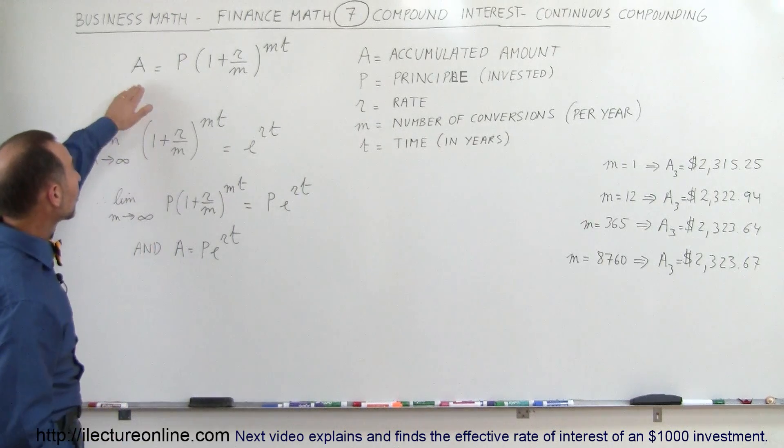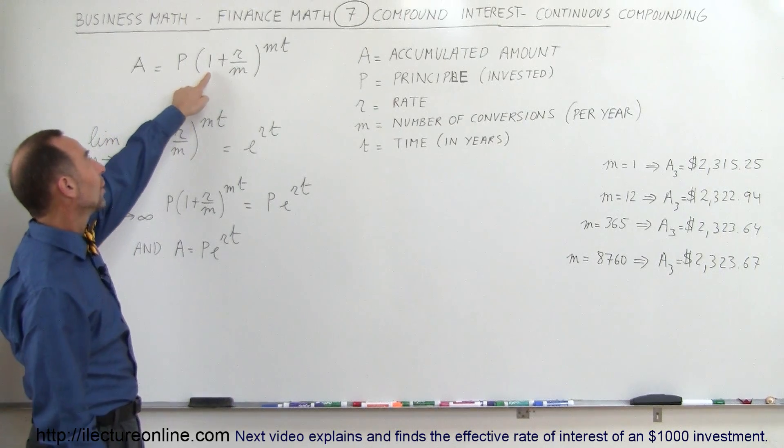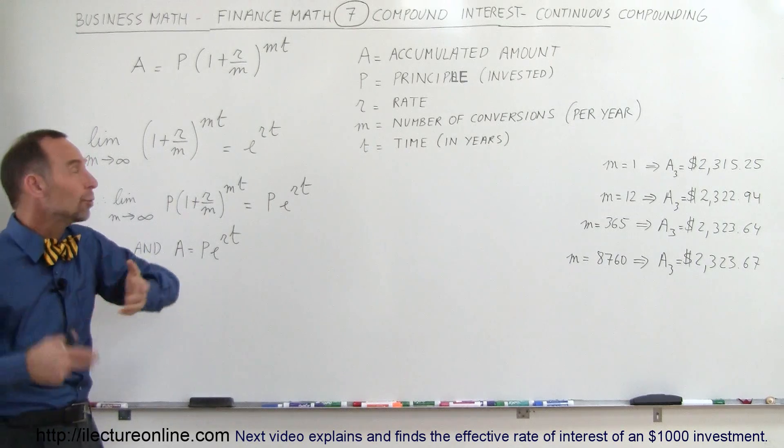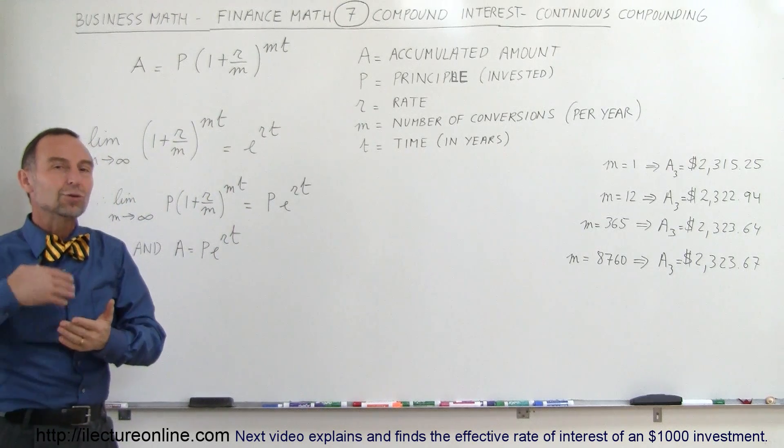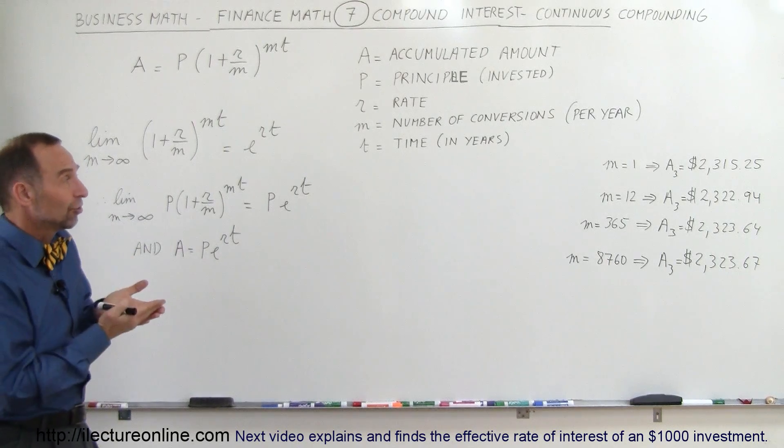So going back to our equation where the amount accumulated is equal to the principal invested, times the quantity 1 plus the rate divided by the number of conversions. Typically in banks we use M equals 365 because we do accumulated interest every day.